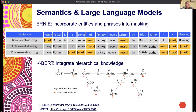Another example is a model called KBERT, which explicitly integrates hierarchical knowledge into the representation. We see in this example that Tim Cook is identified not only as an entity but specifically as belonging to the CEO category and connected to the company Apple. Similarly, Beijing is identified as the capital city of China. Capturing these relationships between entities is incorporated explicitly into the model's training. Both of these models achieve higher performance on tasks requiring more semantic information.